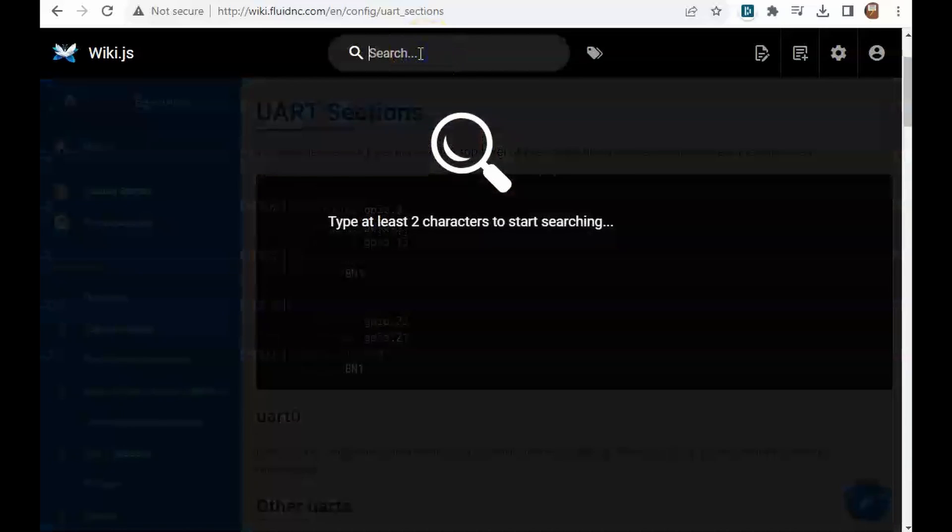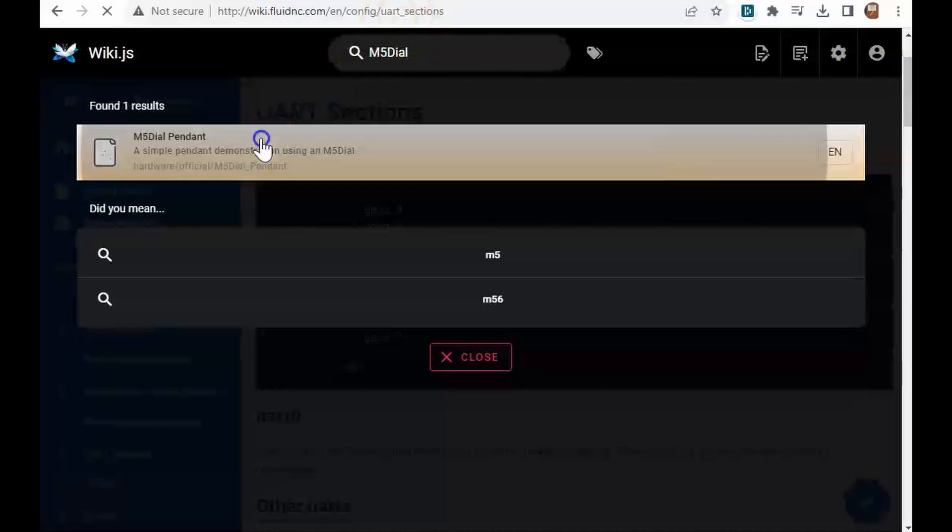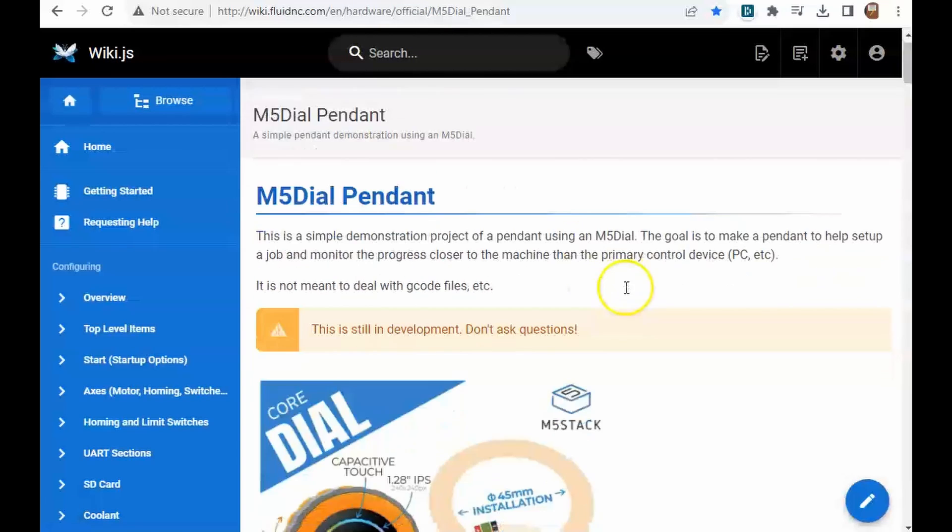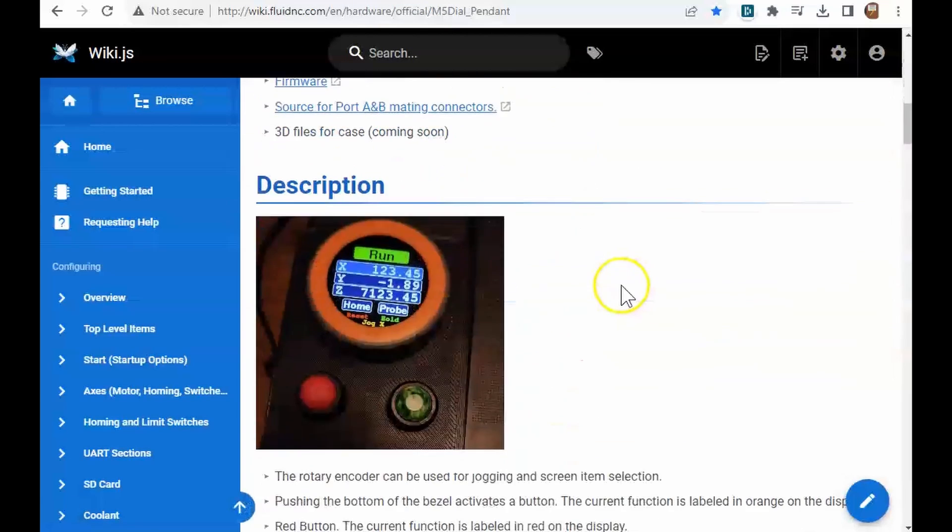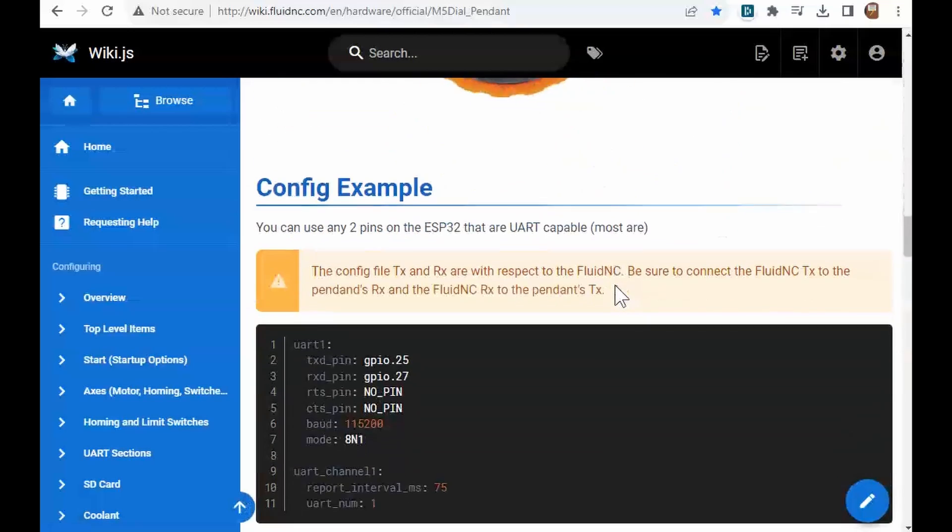We have starter code if you want to make your own display or pendant. It is written to be independent of CPU type and there are examples using Arduino, ESP32, and STM32. The starter code does all the interfacing with FluidNC. There is also a wiki page for the pendant.